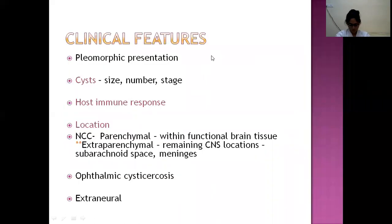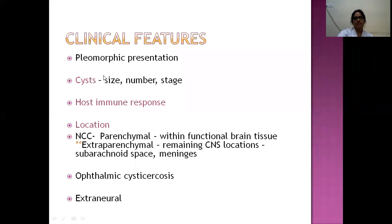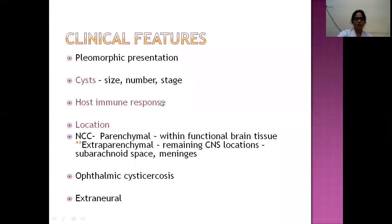Clinical features vary depending on three factors: cyst factors (size, number, and stage), host immune response, and location of the cyst. Larger and more numerous cysts produce more severe presentations. The vesicular and colloidal stages are active; the granular and calcified nodule stages are largely inactive and often asymptomatic. The host immune response depends on immune status — diabetic, elderly, immunosuppressed, or HIV/AIDS patients may not present with classical symptoms.